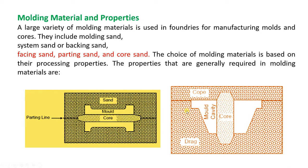Partition lines are available between cope and drag. If both are using the same materials and we apply force from the top side on the cope, they will simply merge with each other. If they merge, it is very difficult to remove them after the ramming process. So we need a separation element — that is the partition line. We use partition sand, something different from the other two, so separation will be very easy.